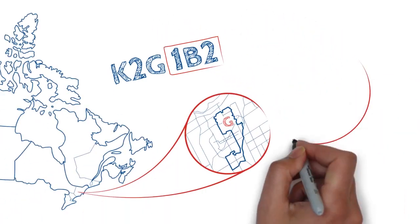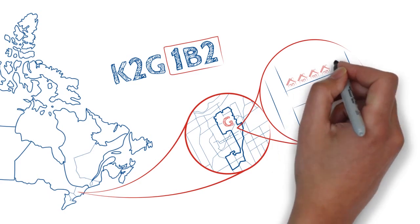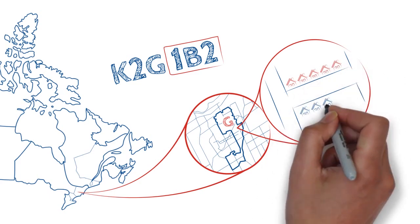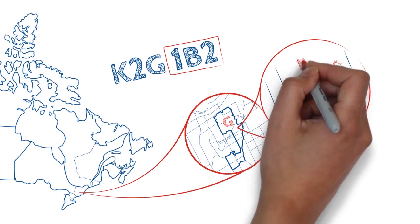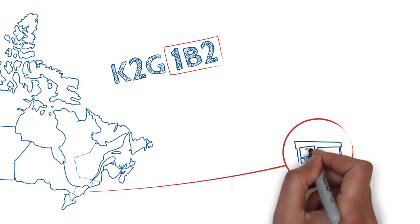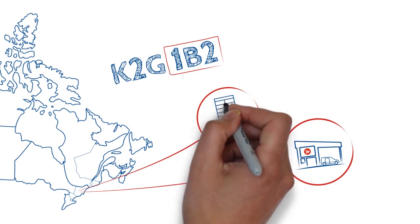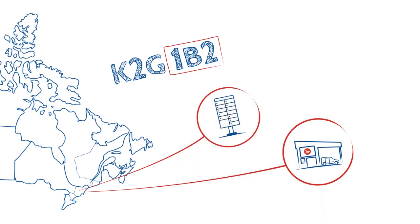When a row of points of call have the same LDU, it creates a block face. In our example, we now know the specific city block and even the side of the street for the address that is to receive mail. Note that LDUs are not necessarily consecutive like street addresses, and in a less densely populated area, they can stretch out over a much larger area. All of these elements of the postal code work together for you and Canada Post to quickly identify the customer's point of call, as well as the processing and delivery facilities and post offices where mail must be directed.